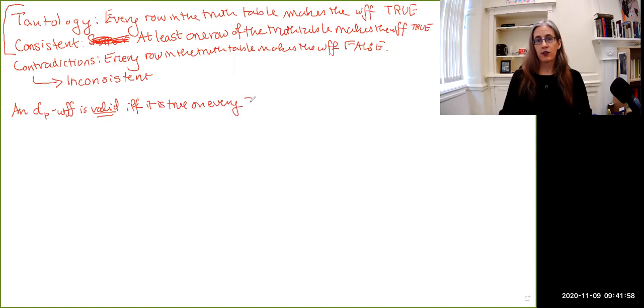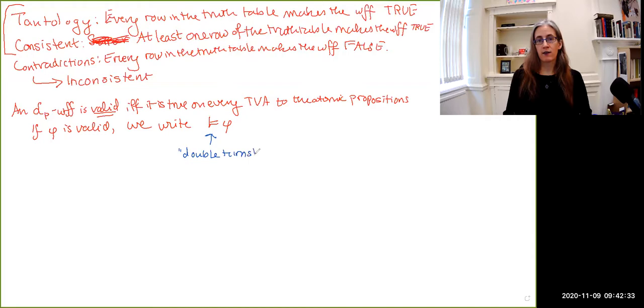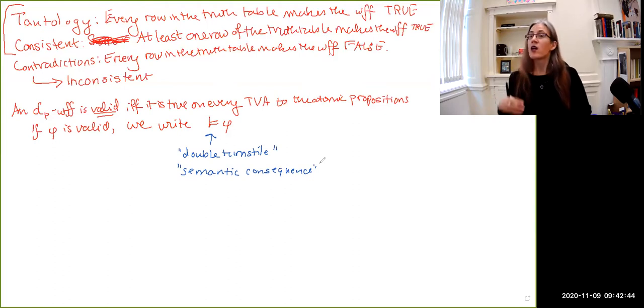So we have some propositional language LP and a WFF phi is valid if and only if it is true on every truth value assignment to the atomic propositions. So this is just another way of stating what it is to be a tautology. But the important thing is that if phi is valid, then we write this. So this symbol that I've just written right here is called the double turnstile or semantic consequence, because this is a notion that has to do with the semantics, the meaning, the truth value of certain sentences. So if you have something that is going to be true on every truth value assignment, then we can write this down.